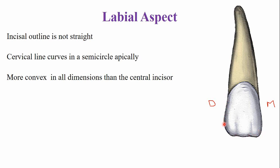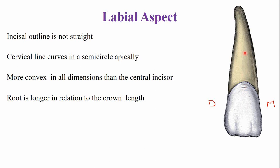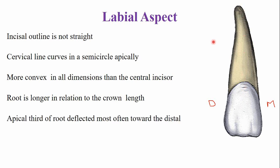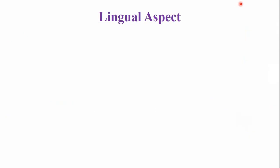The disto-incisal angle is more rounded in shape. The root is longer relative to the size of the crown. In the apical third of the root, it curves or deflects in a distal direction, which differs from the maxillary central incisor where the root is straight — in the lateral incisor, the root curves distally.